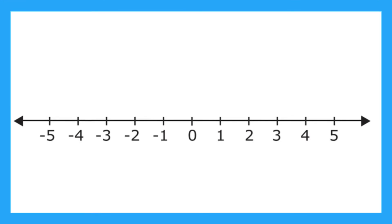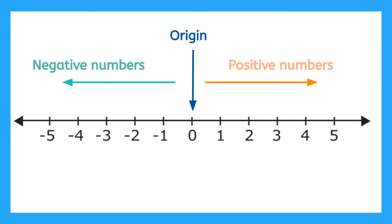So here is a full number line. If this point is zero, also called the origin, then you know that everything going to the right of zero is a positive number. And that means everything going to the left of zero is a negative number.